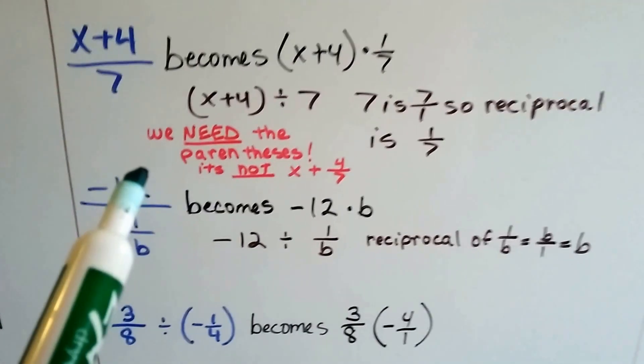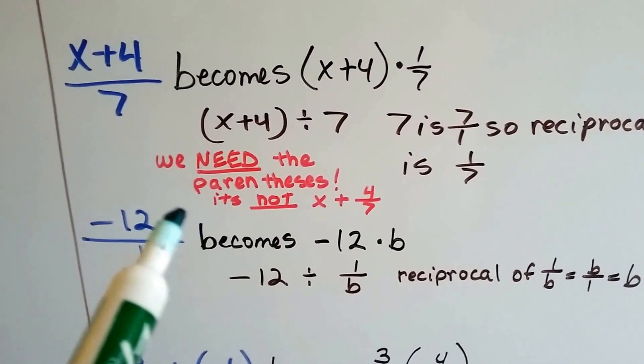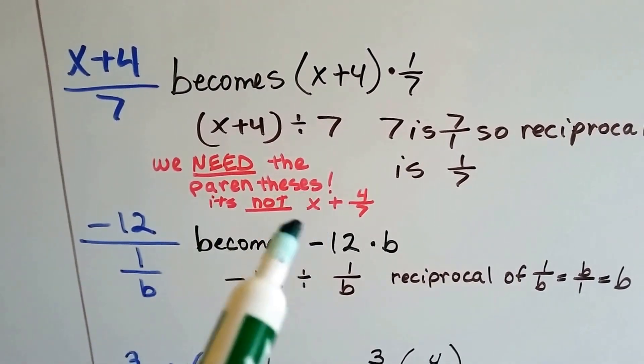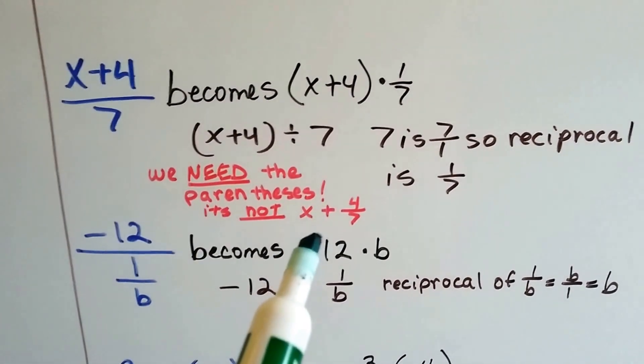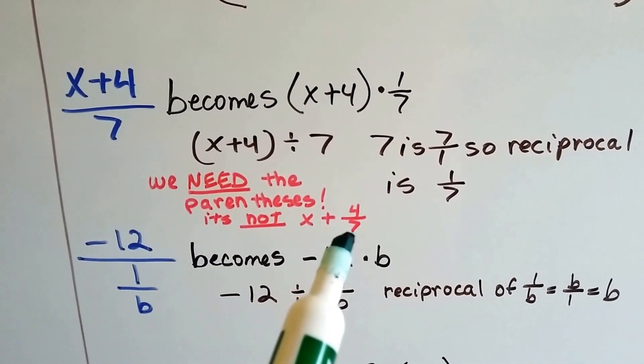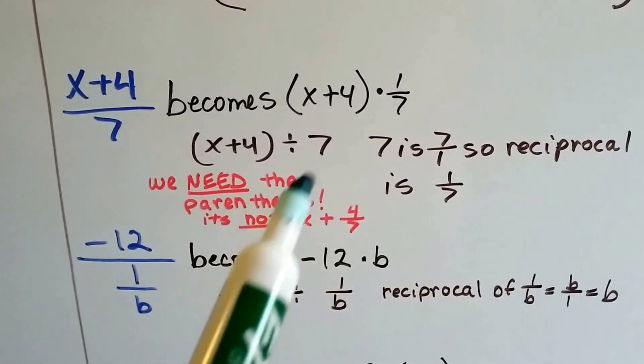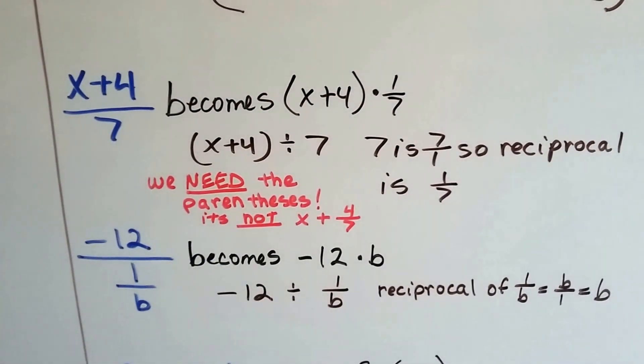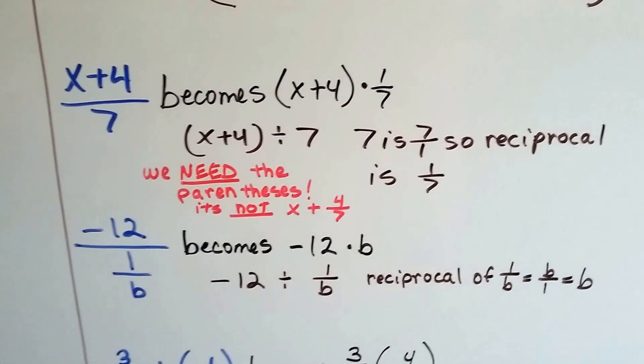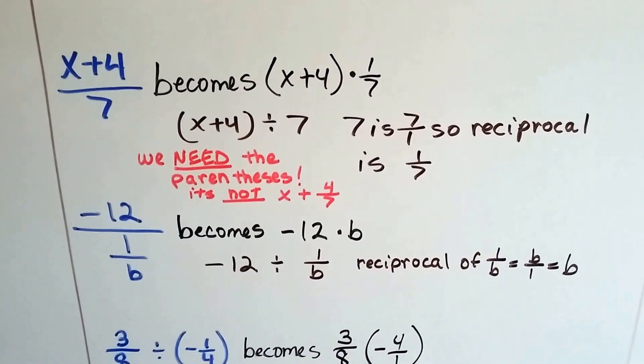And we need the parentheses right here because we want to make sure that it's understood that we're not doing x plus 4 divided by 7, which would be 4 over 7. We want to make sure that everyone knows that it's x plus 4 and then we're multiplying it or dividing it by 1 seventh or 7. So those parentheses are very important.